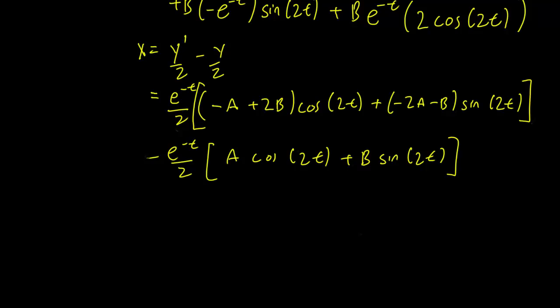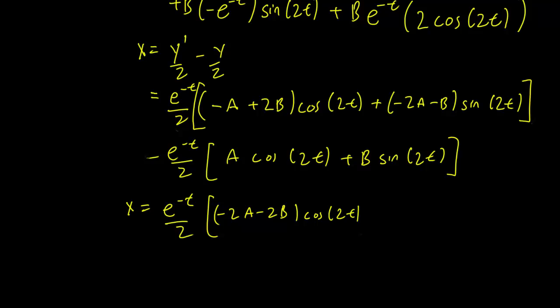Collecting all terms at once for x, and combining the cosine and sine contributions from y prime over 2 and y over 2, we get x equals e^{-t} times the quantity minus a plus b cosine 2t plus minus a minus b sine 2t.